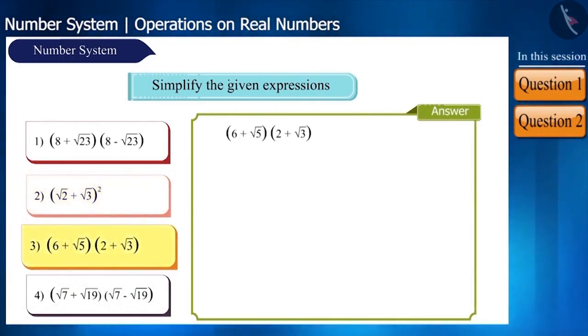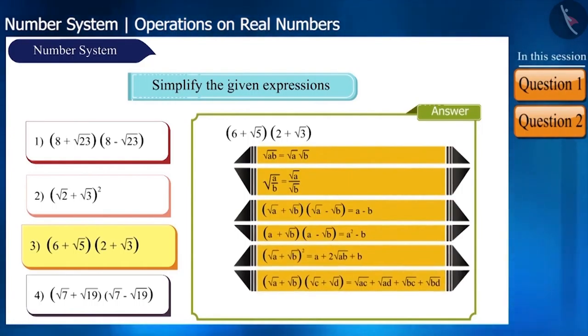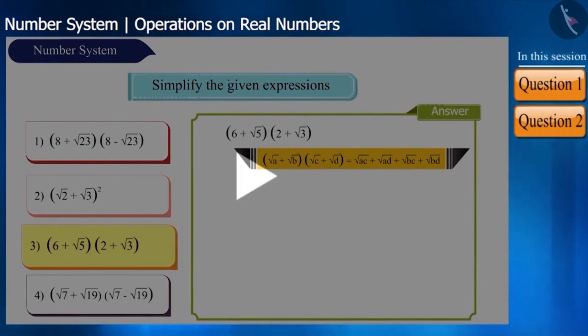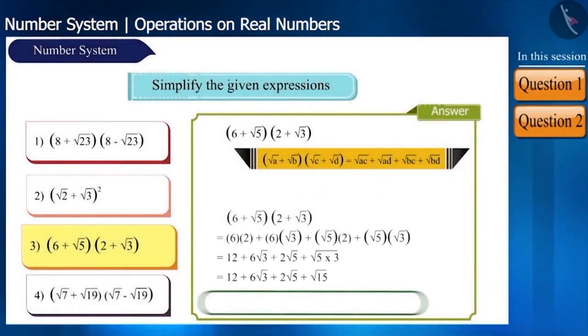Now let's take the next expression. 6 plus root 5, 2 plus root 3. In this expression, we will use the identity root A plus root B, root C plus root D is equal to root AC plus root AD plus root BC plus root BD. It is very easy. Pause the video and try to solve it yourself and see if you are getting the same answer.